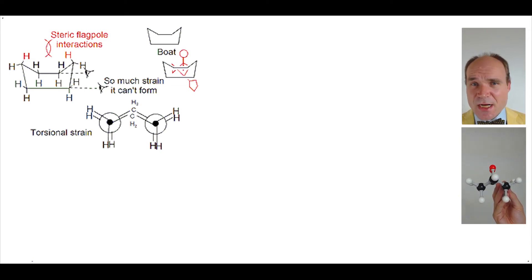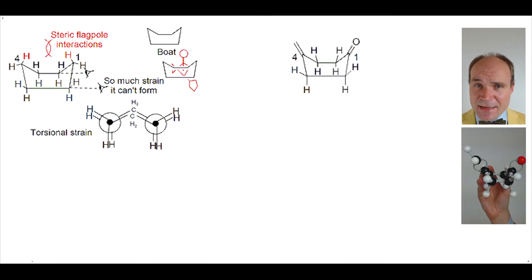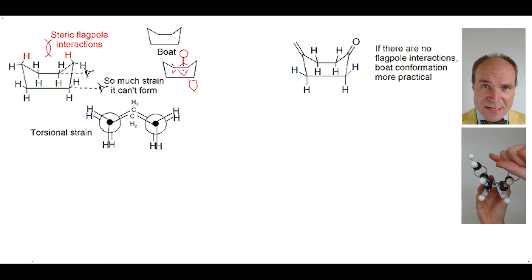If we change carbons one and four from being tetrahedral, or sp3, to being trigonal planar, or sp2 if you like, we remove the flagpole interactions.